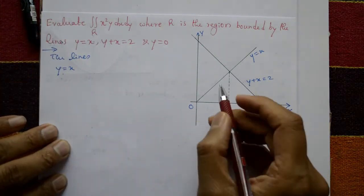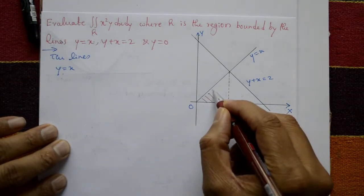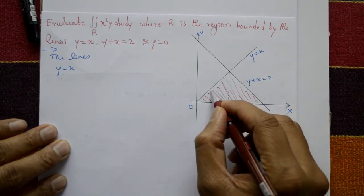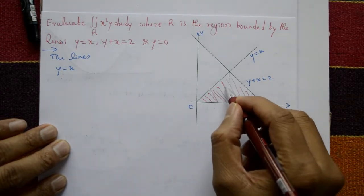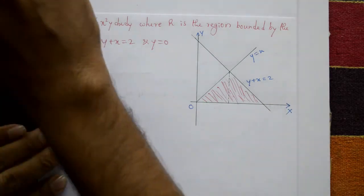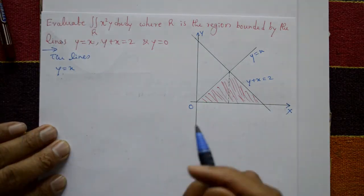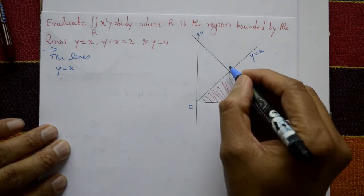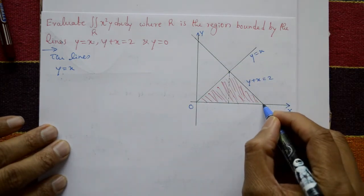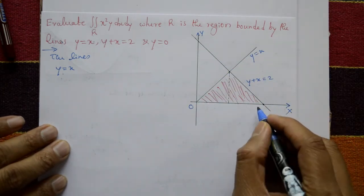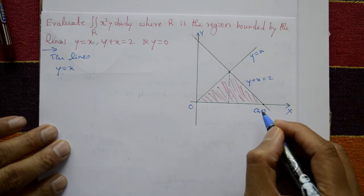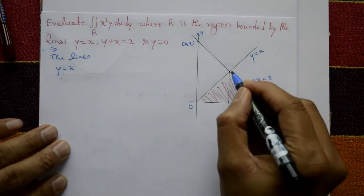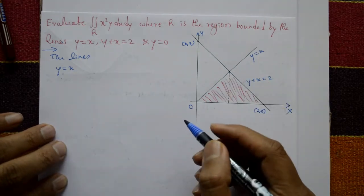Now we need this region — find this area. Find the points of intersection. For x plus y equals 2, the intercepts are (2, 0) and (0, 2).